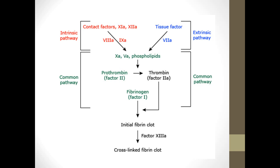Just a reminder of the clotting pathway. You have your intrinsic pathway, your extrinsic pathway, and then the common pathway. Warfarin affects the prothrombin factor II level, factor VII, factor IX, and factor X. So it really affects the entire clotting pathway — intrinsic, extrinsic, and common pathway.